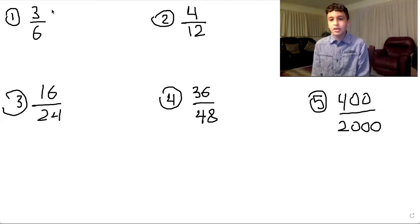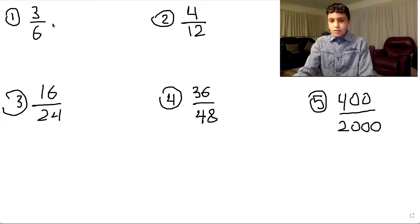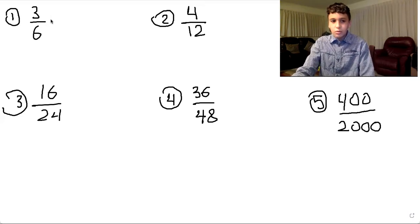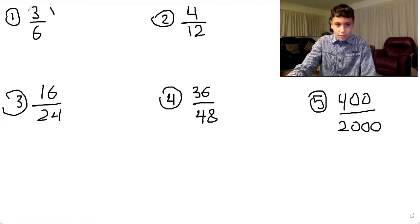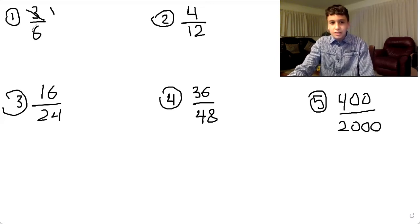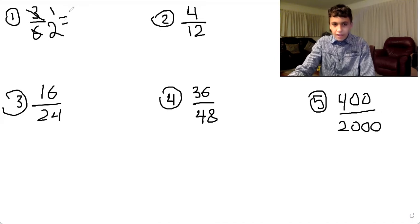First, I'm going to be starting with how to reduce fractions. The first thing we start with is looking for a number that can go into the numerator and the denominator. So three can go into itself one time, and three can go into six two times. So therefore, our final answer will be one over two, or one half.